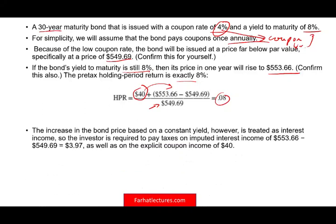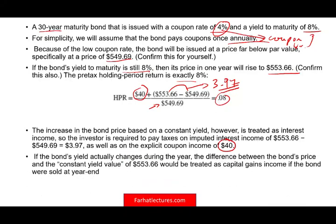The increase in the bond price based on the constant yield is treated as interest income. So the investor is required to pay taxes on that difference — the implicit interest, which is $3.97. Of course you also pay taxes on the $40 cash coupon you received. If the bond yield actually changes during the year, the difference between the bond's market price and the constant yield value of $553.66 will be treated as capital gain, and is taxable only if the bond is actually sold. If it's not sold, you have unrealized capital gain and don't have to worry about it — but the implicit interest is still taxable.